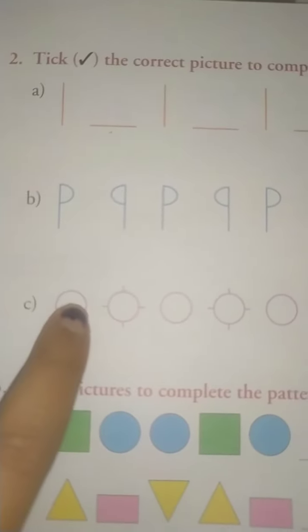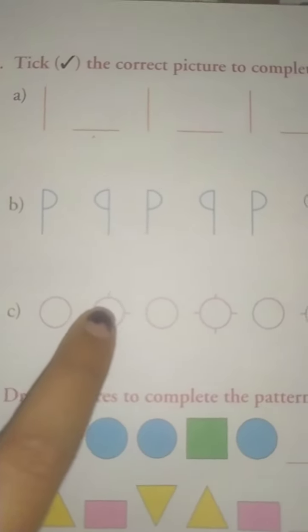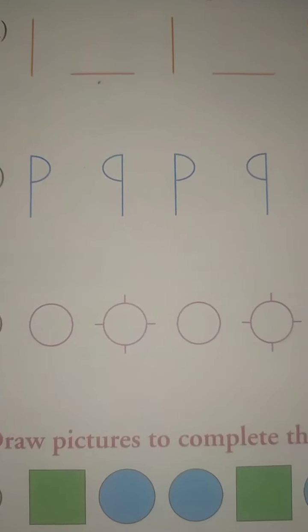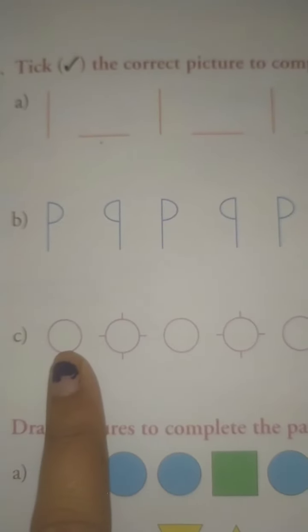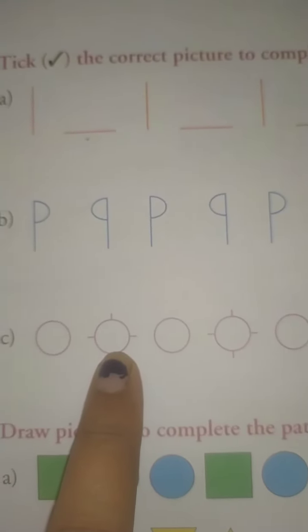Now see, this is a simple circle and this is a circle with 4 lines. So here, simple circle and circle with 4 lines.